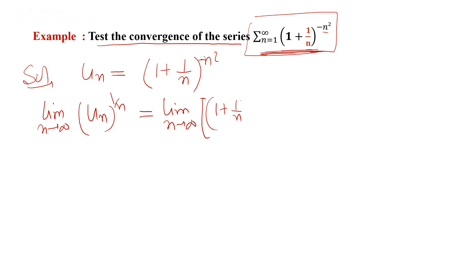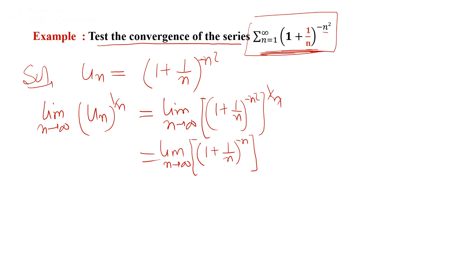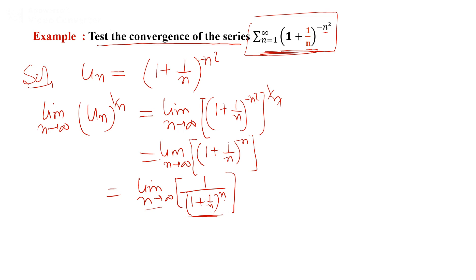By the Cauchy root test, we find limit as n→∞ of u_n^(1/n): we get (1 + 1/n)^(-n²) raised to the power 1/n. The exponent simplifies as -n² · (1/n) = -n, so we get limit as n→∞ of (1 + 1/n)^(-n).